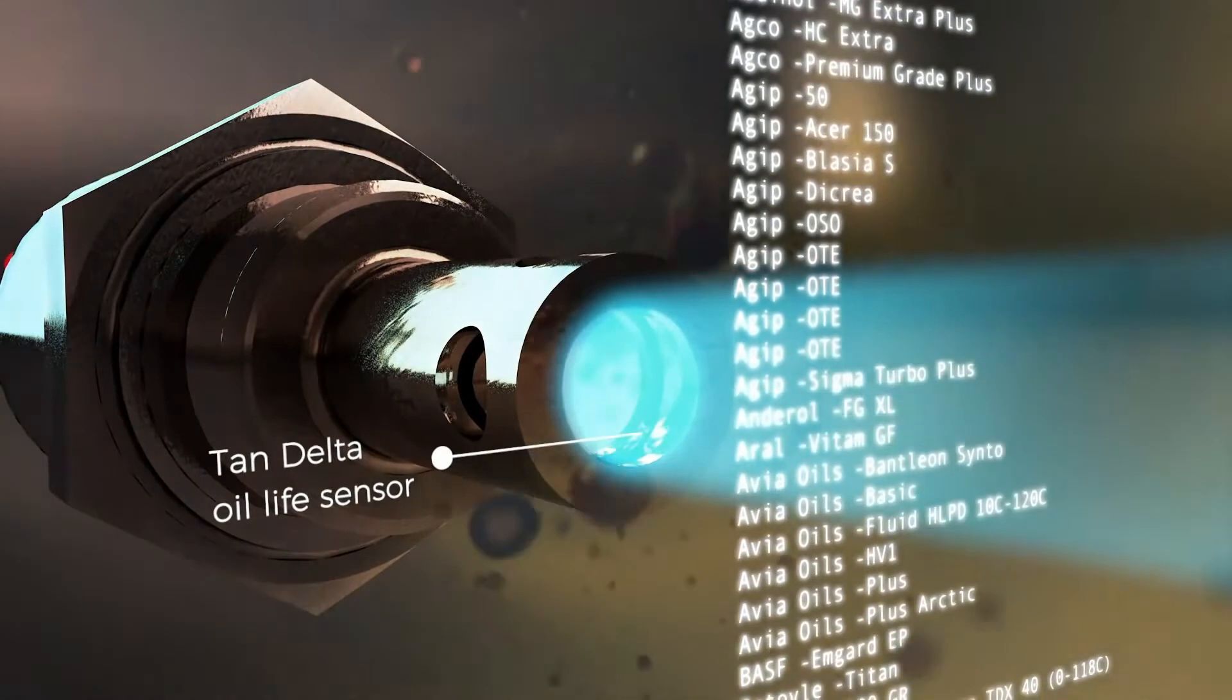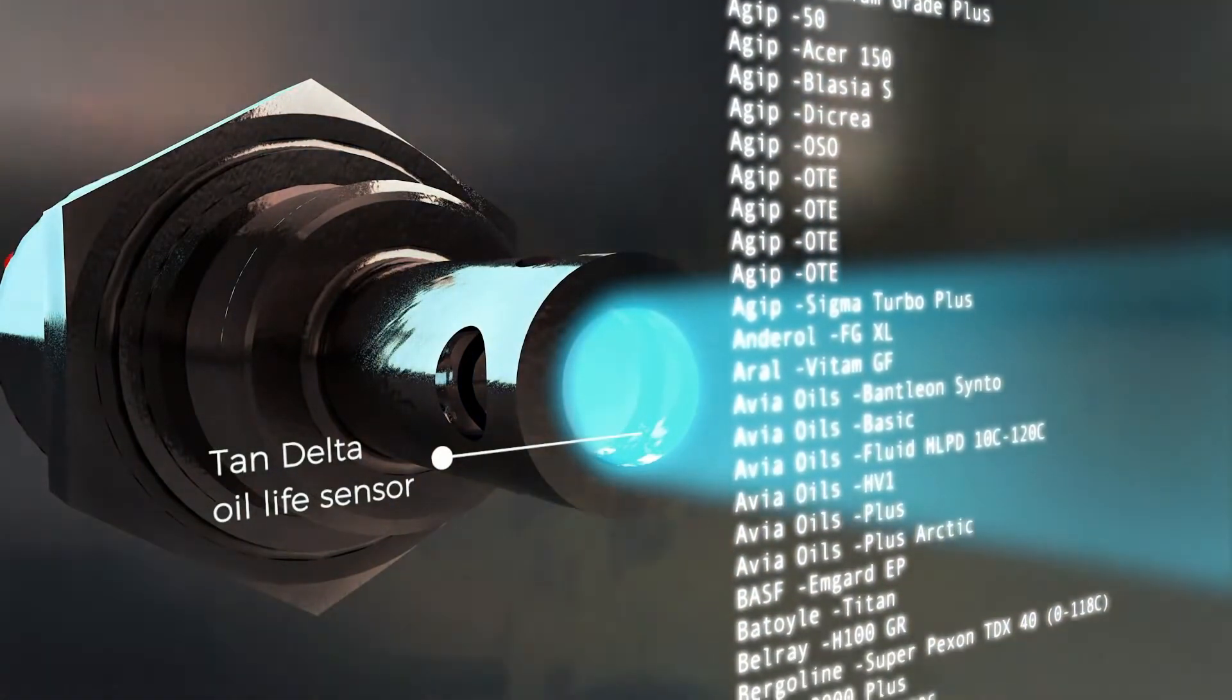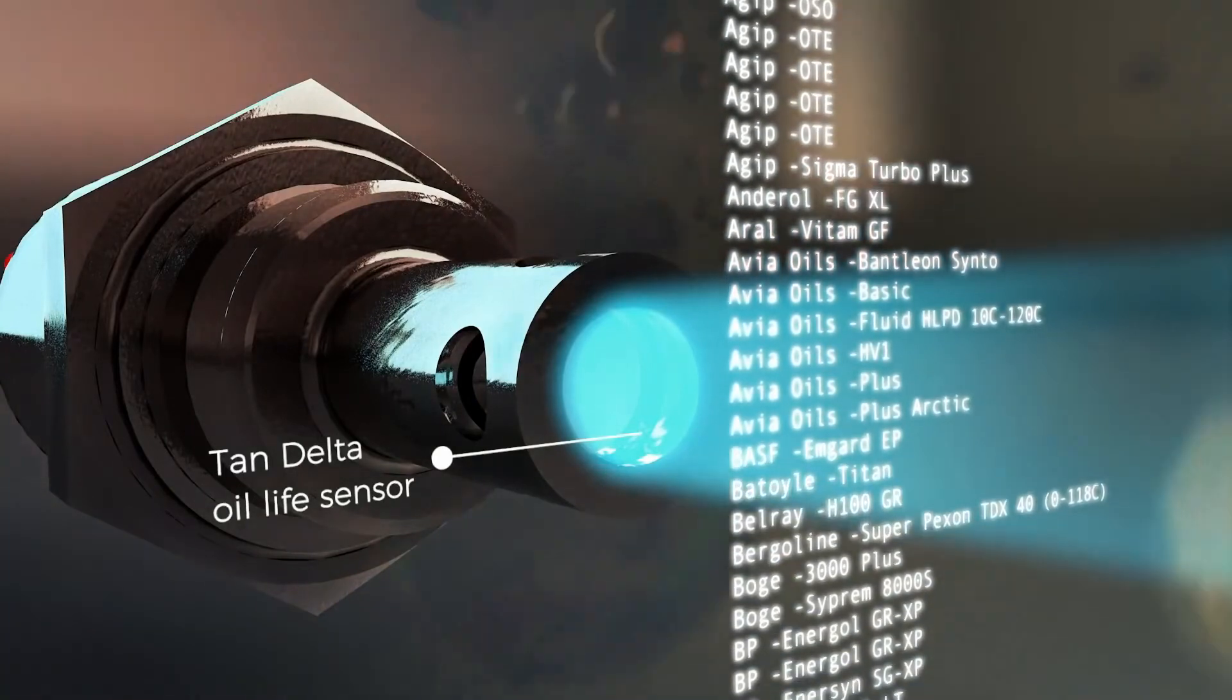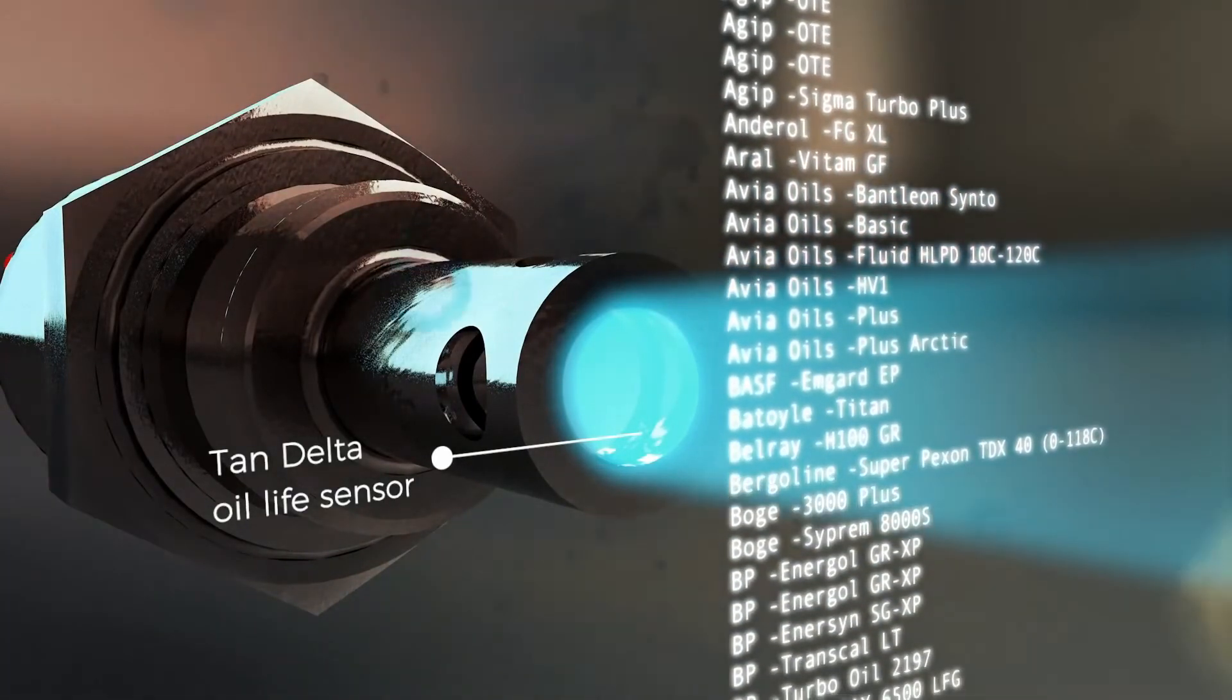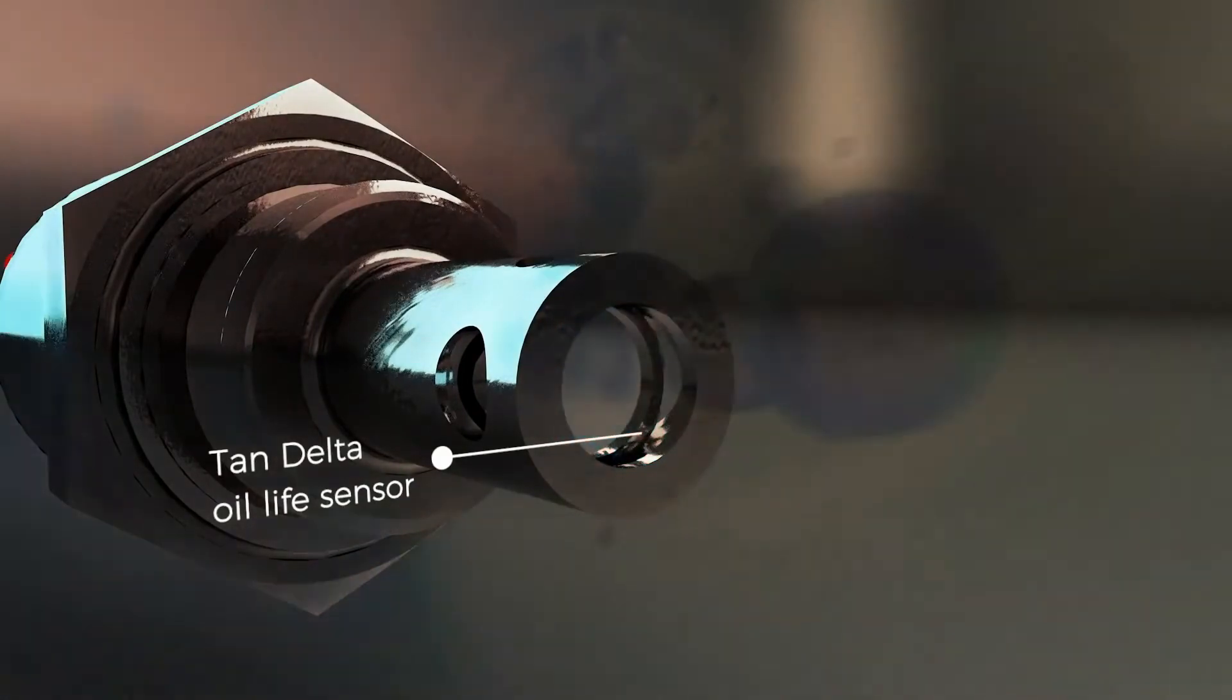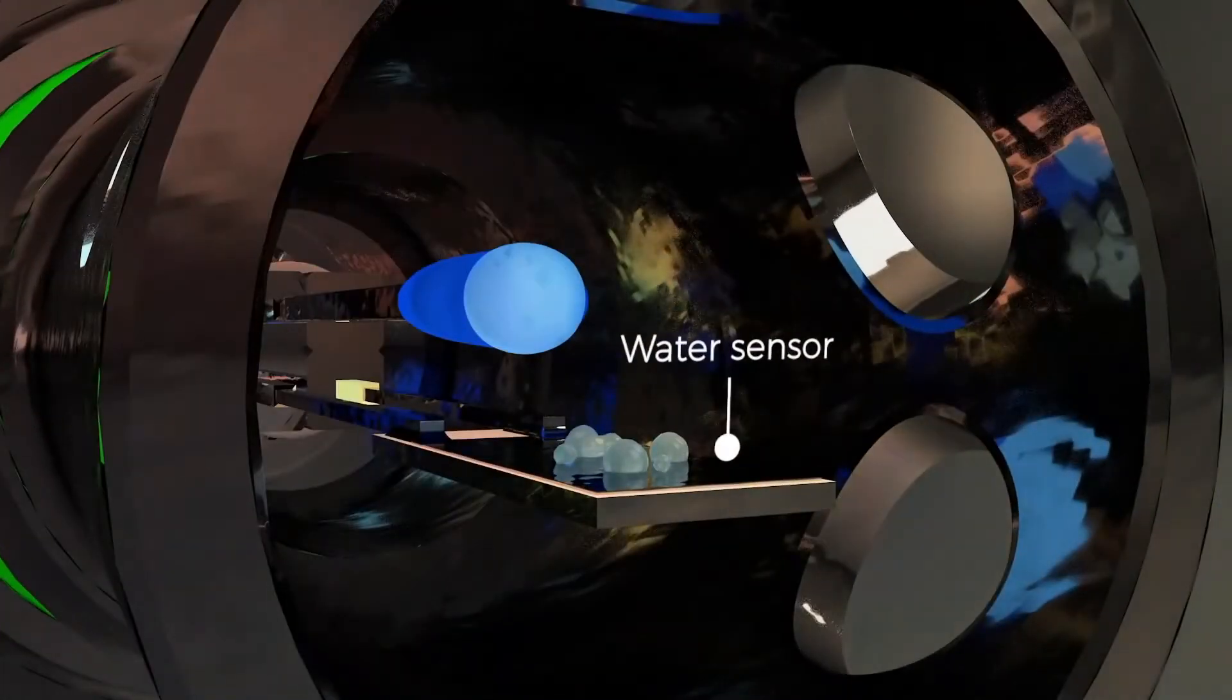The Tan Delta oil life sensor monitors the overall oil condition, giving unparalleled sensitivity and accuracy, drawing upon over 500 common industrial oil life profiles, also with the ability to self-calibrate. The relative humidity sensor analyzes moisture content.